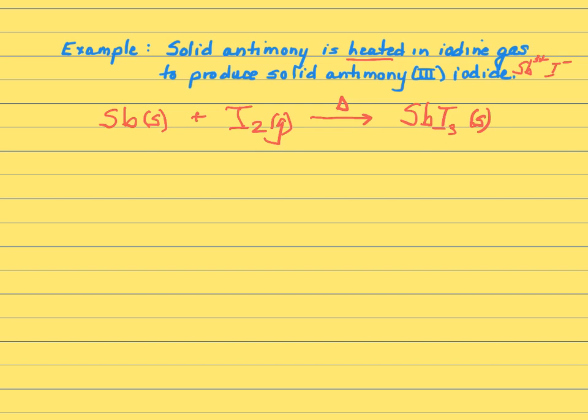So the Sb's look okay, but I've got two I's and three I's. So if I put a two here and a three here, now I've balanced my iodines, but now I've messed up my antimonies. So I'm going to put a two here. So I've written a balanced equation.